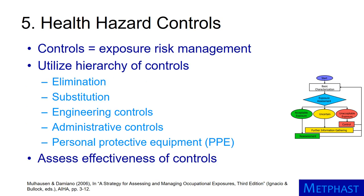If exposures are clearly unacceptable for an SEG, then controls should be implemented to manage the risk of exposure. This is accomplished by utilizing the hierarchy of controls: elimination, substitution, engineering controls, administrative controls, and personal protective equipment. After they are implemented, the effectiveness of the controls should be assessed.